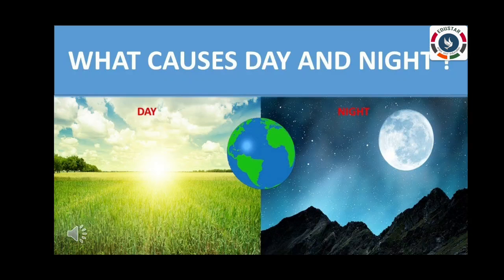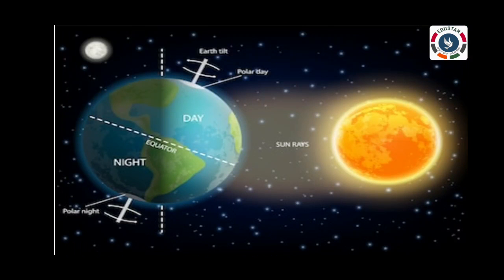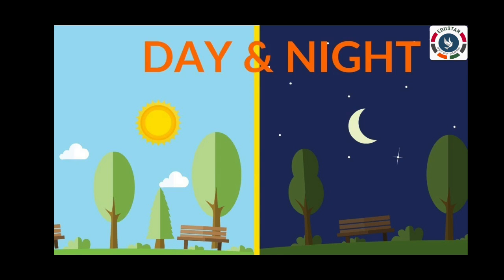What causes day and night? The earth moves on its own tilted axis. This movement is called rotation. It takes 24 hours for the earth to complete one rotation. At any given time, the part of the earth that faces the sun receives light and thus has day, whereas the other part of the earth is away from the sun, does not receive light and has night. Hence, the rotation of the earth causes day and night.